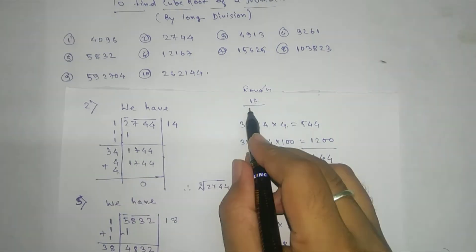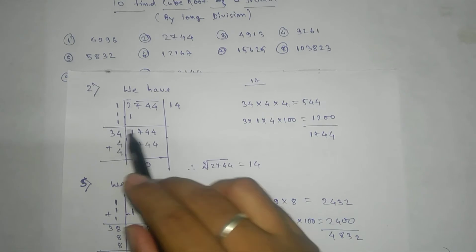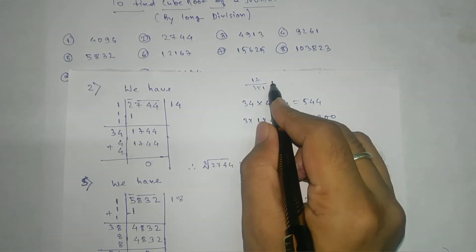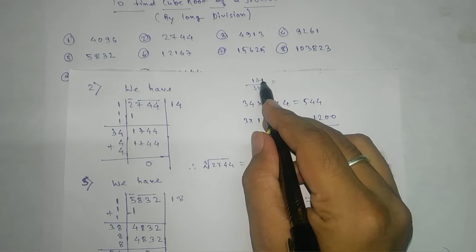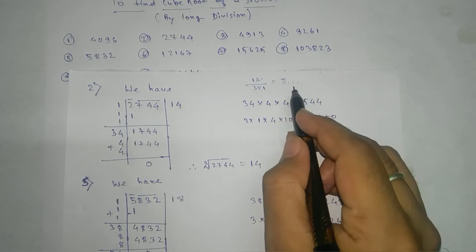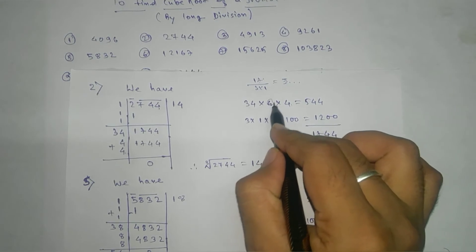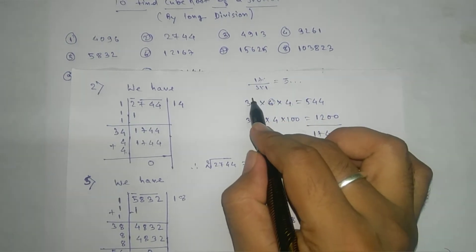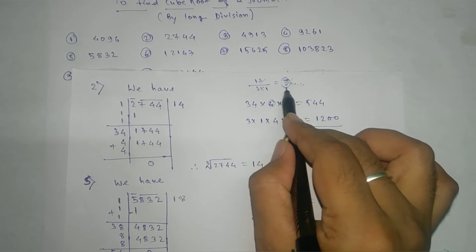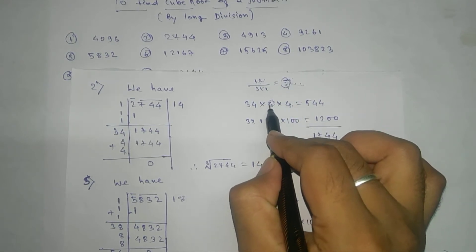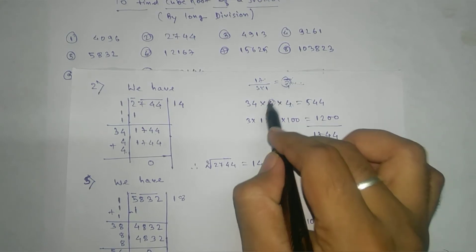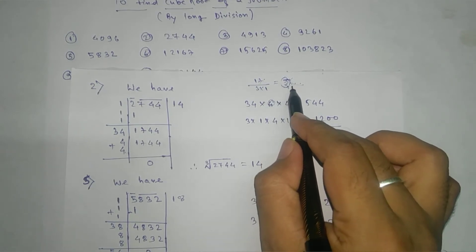So 3 into 1 — checking, we get 5 point something. That means whatever number we are going to take is 4 or less than 4. We get 5 point something, so leaving the decimal part, take the integral part and check with 5 or 4. But one more idea: if we take 5, then 15 into 15 into 15 — if you multiply the last part by 5 into 5, it's not the same. That means you will not get it by taking 5, so check less than 5, not more than 5.